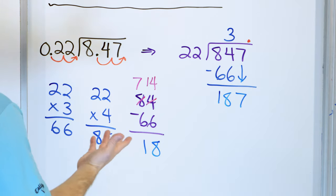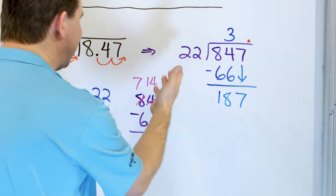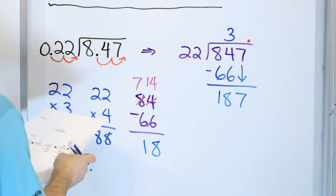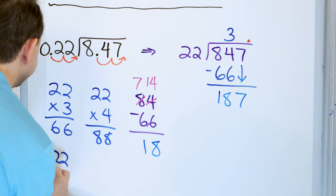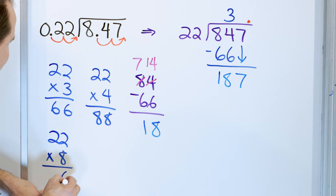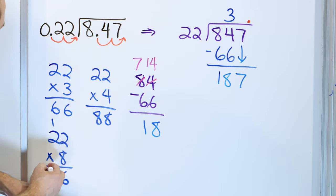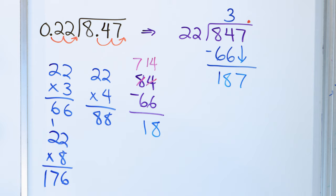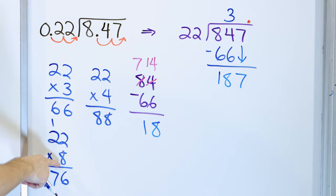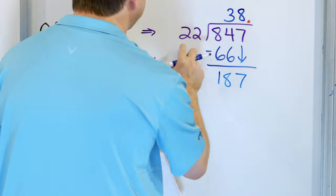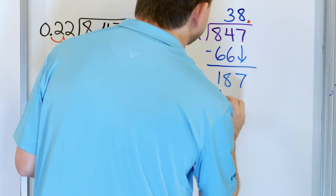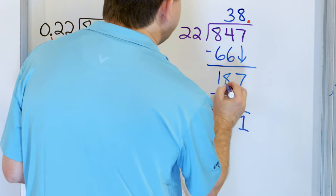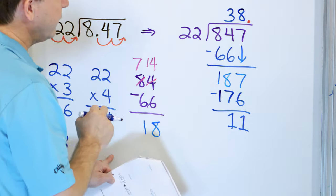So let's go over here and see what 22 times 8 is: 8 times 2 is 16, carry 1; 8 times 2 is 16, one more is 17 — so that's 176. If I go times 9, I'm going to blow past 187. So it has to be times 8. So it goes 8 times here, and 8 times 22 is 176. We subtract: 7 minus 6 is 1, 8 minus 7 is also 1.